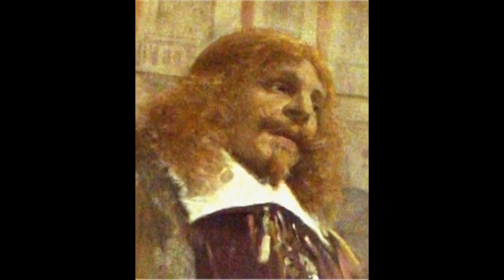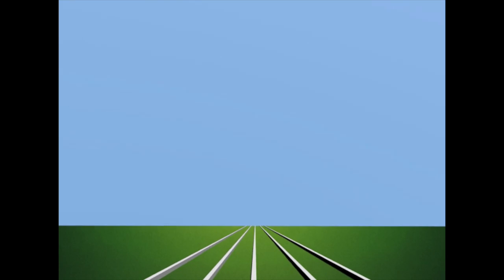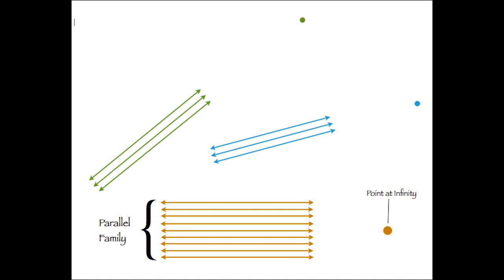Mathematicians like Girard de Sarga came along in the 1600s and said, let's make something mathematically useful out of this vanishing point. Let's say parallel lines really do meet, and let's now call this vanishing point the point at infinity. We can now say a whole family of parallel lines meet at this point at infinity. What's more, each family of parallel lines actually gets its own point at infinity.